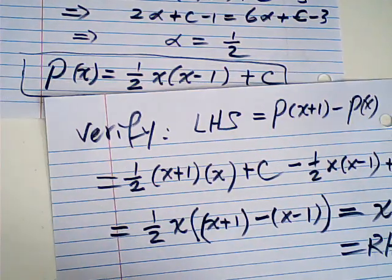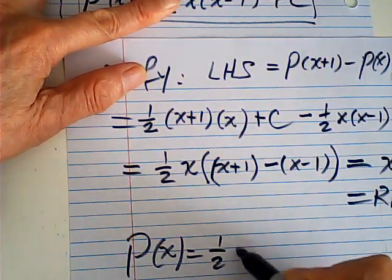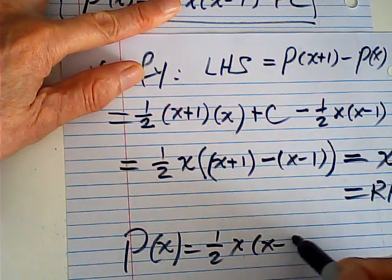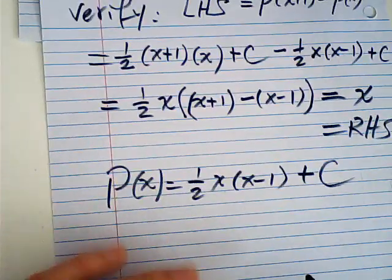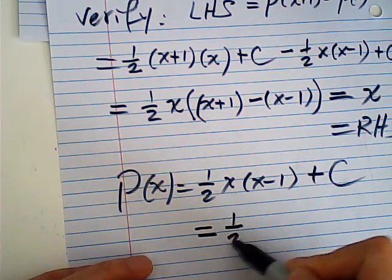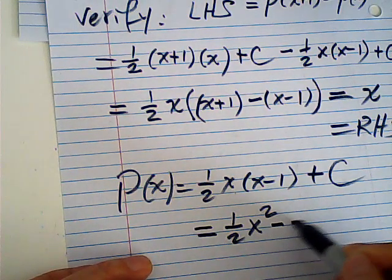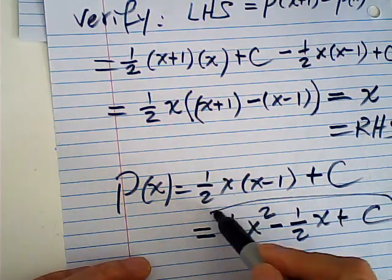This is my solution. Therefore P(x) is equal to 1/2 · x(x-1) plus C. C is my y-intercept, P(0). So this is equal to 1/2 x² minus 1/2 x plus C. That is the polynomial we are looking for.